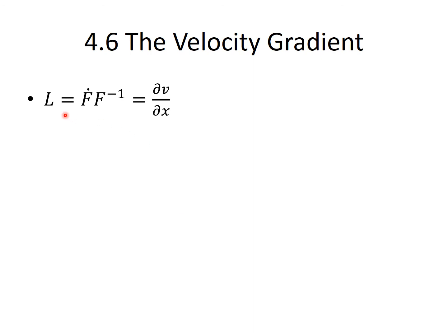The velocity gradient is equal to the partial derivative of v with respect to the spatial coordinates x. In component form, L sub ij is equal to partial vi by partial xj.